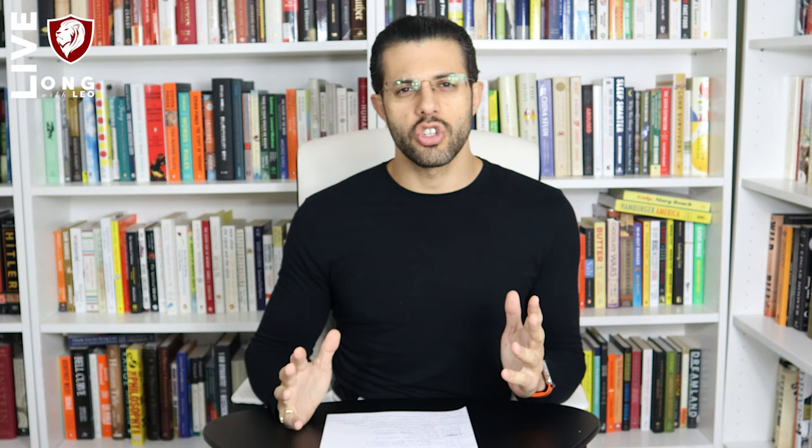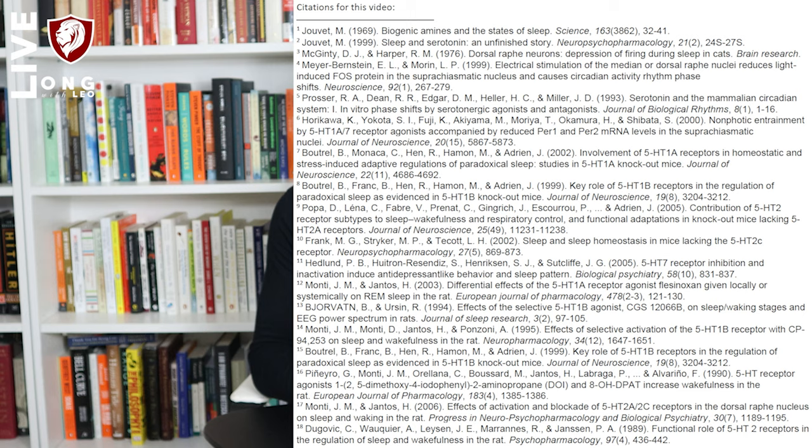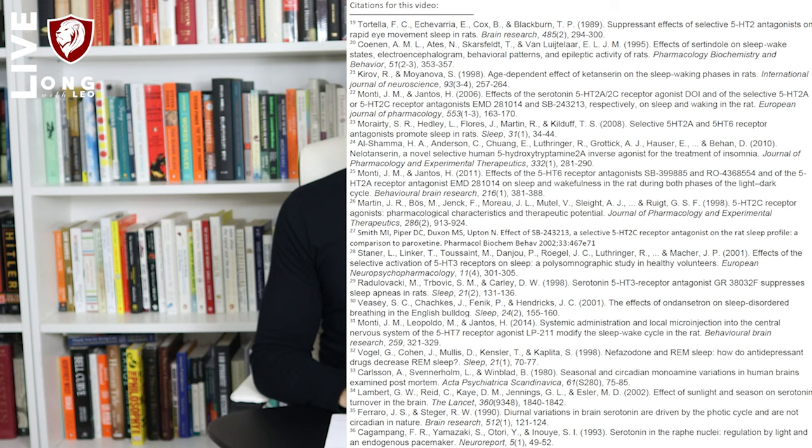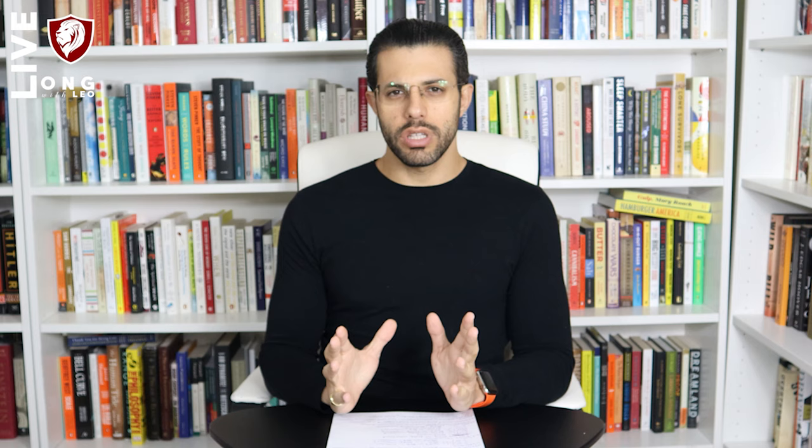Let's get started with circadian serotonin. It was originally noted by a researcher named Michel Jouvet that serotonin was thought to be a modulator of sleep, because in rodents who had damage to the raphe nuclei, they would display a phenotype of insomnia. If the raphe nuclei — the serotonergic nuclei that actually produce serotonin in the brain — are damaged, meaning serotonin synthesis is inhibited, then the rodents developed insomnia.